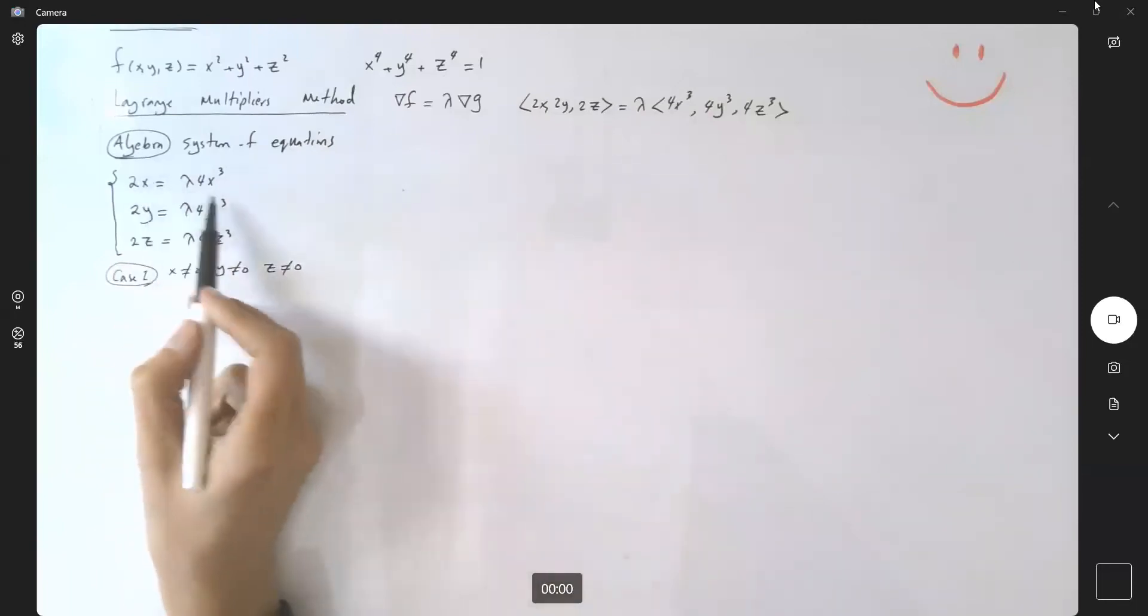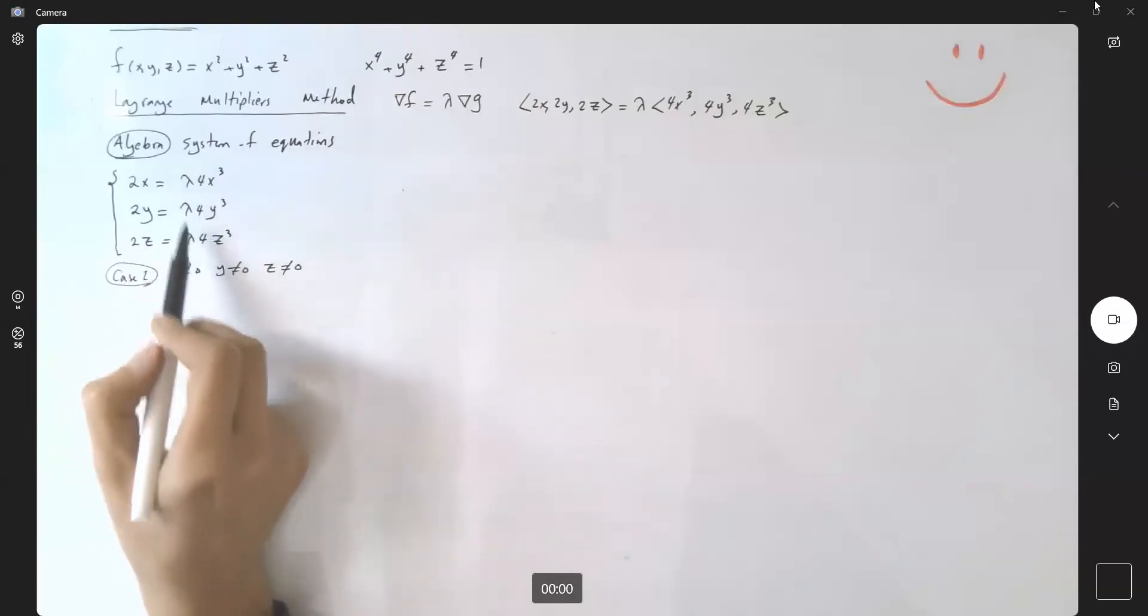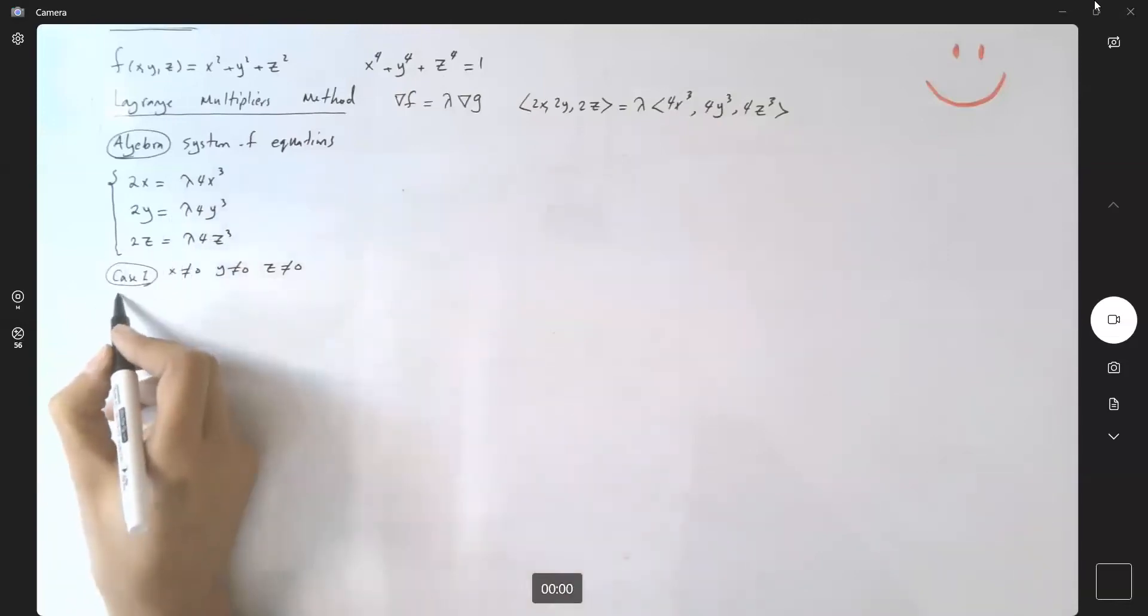What's the meaning of that? It means we can divide by x, divide by y, and divide by z to isolate lambda. This helps us solve the system. So this is the first case.